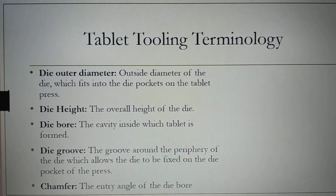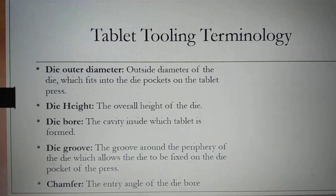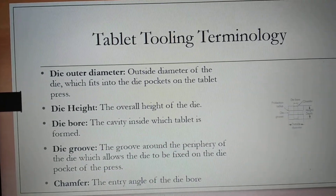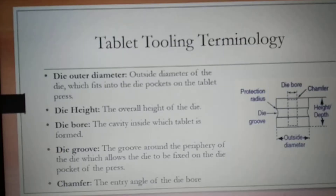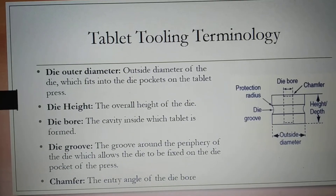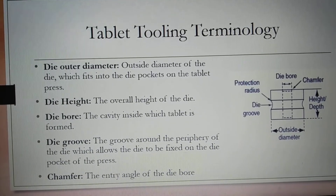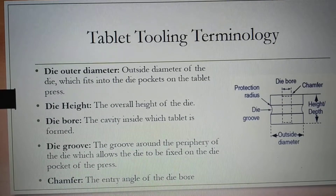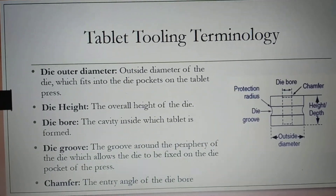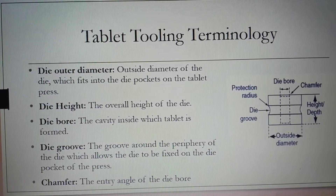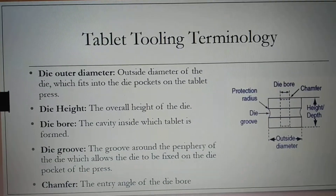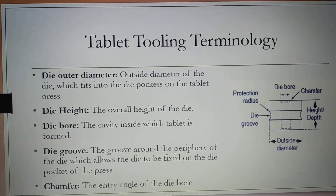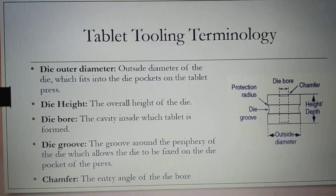Now some terminologies of the dies. Die outer diameter — as the name indicates, it is the total diameter of the die which fits into the pocket of the tablet press or the turret of the tablet press. Die height or depth is the overall height of the die. Die bore is the cavity inside which the tablet is formed.